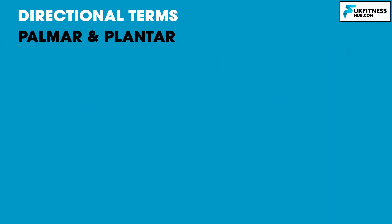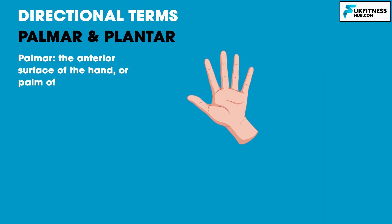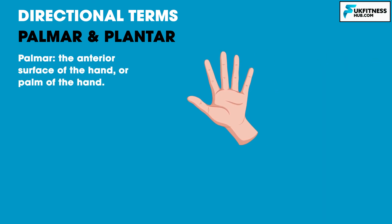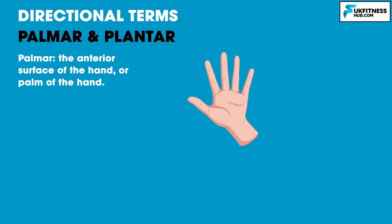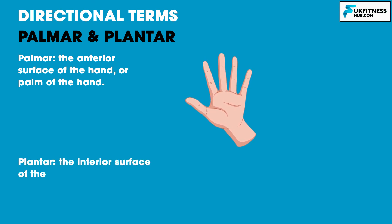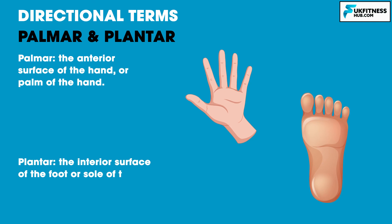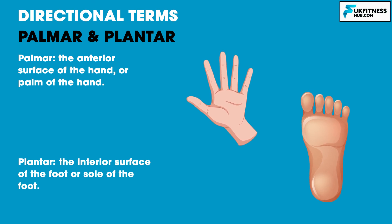Finally, we have palmer and plantar. Palmer refers to the anterior surface of the hand — the palm — which is the part of the hand you would give someone a high five with. Plantar means the sole of the foot. Normal walking, of course, involves walking on the soles of your feet.